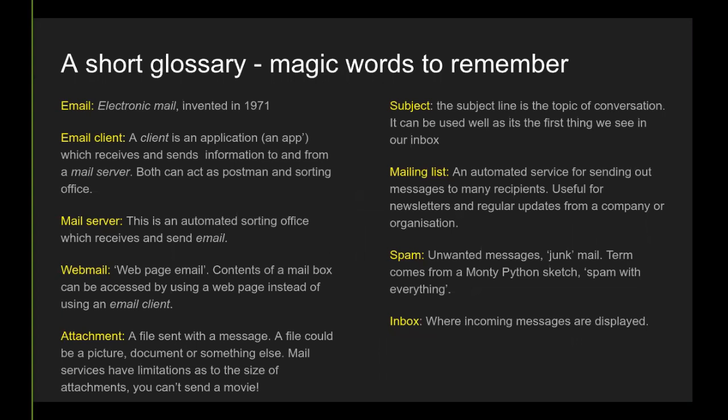Jargon busting time — magic words. Email's been around since 1971, a long time. The structure of it basically comes from a business context. An email client is an app on your device — a computer, tablet, or phone — and it sends and receives messages to and from a mail server, just like that postman and that sorting office. The mail server is that sorting office, generally where things go to.